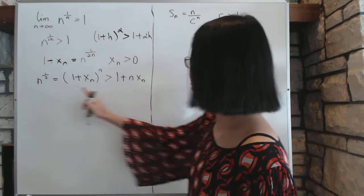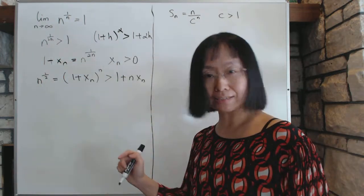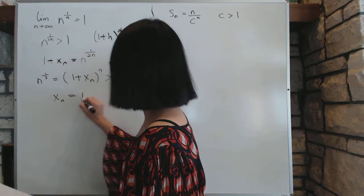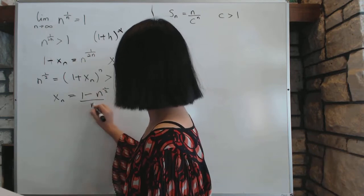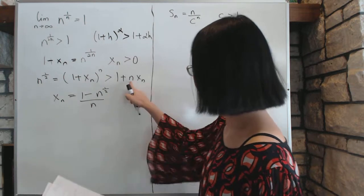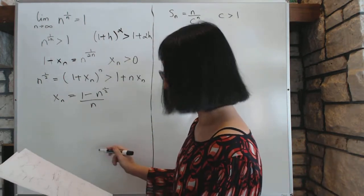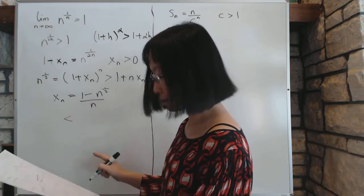Now next, we will isolate from this particular inequality from here to here. We will isolate xn. So xn equal to 1 minus n to the power 1 and a half and divided by n, which is this thing minus that and divided by what's in front of it. Now that, what is that? That is less than, less than.